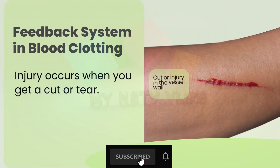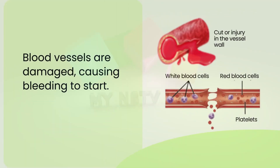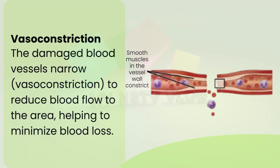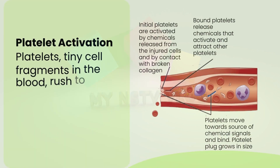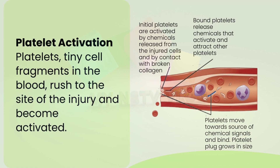Injury occurs when you get a cut or tear — blood vessels are damaged, causing bleeding to start. The damaged blood vessels narrow through vasoconstriction to reduce blood flow to the area, helping to minimize blood loss. Platelets, tiny cell fragments in the blood, rush to the site of the injury and become activated.